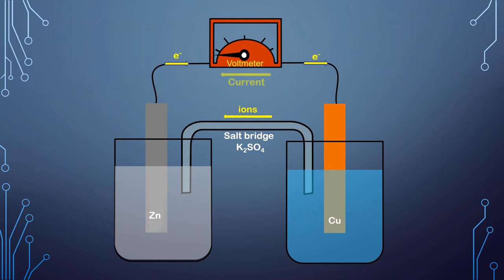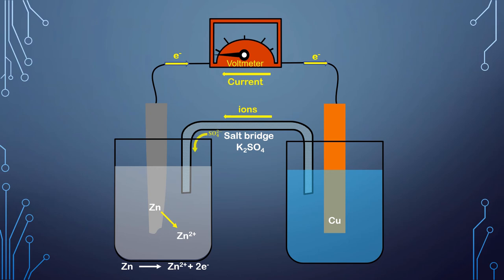As the current flows in the circuit, the zinc rod loses weight. This is due to the oxidation of zinc, and thus the concentration of Zn²⁺ ions increases in the left-hand side beaker. To maintain electrical neutrality, the anions — that is, the sulfate ions from the salt bridge — must enter into the half cell to combine with the excess Zn²⁺ ions that are formed.